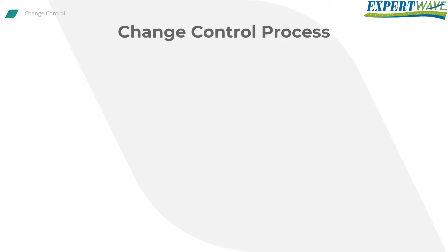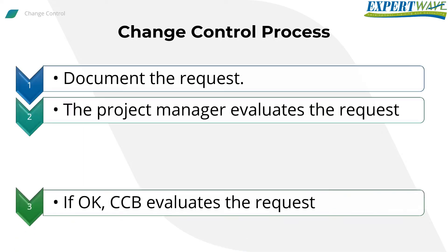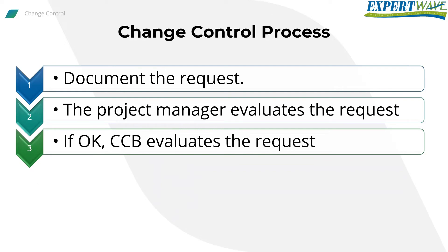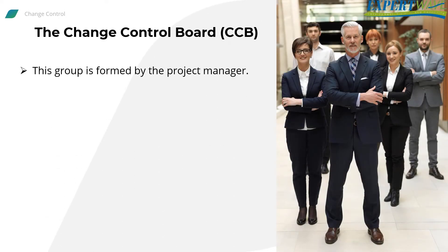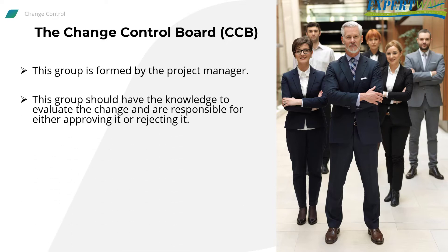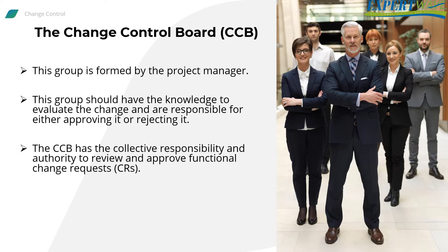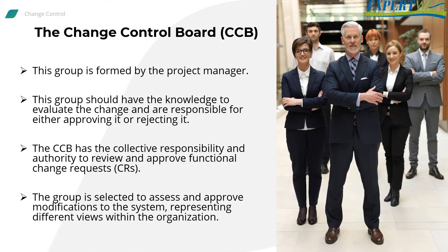Back to our change control system — if the change is legitimate from the project manager's point of view, the change request should go through a group of people to evaluate it. This group is usually called the Change Control Board, or CCB, and some companies call it the Configuration Control Board. It is formed by the project manager at the beginning of the project and consists of selected stakeholder members. The CCB has the collective responsibility and authority to review and approve functional change requests.